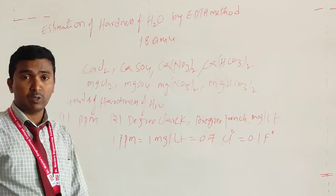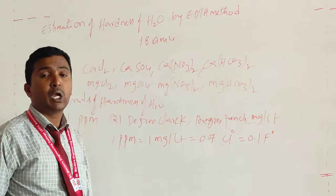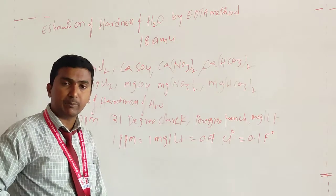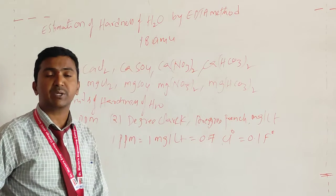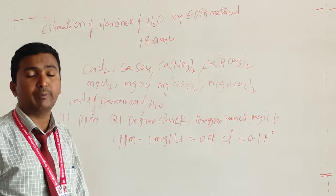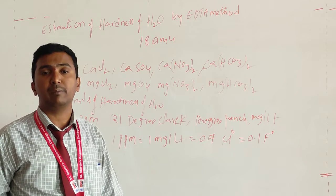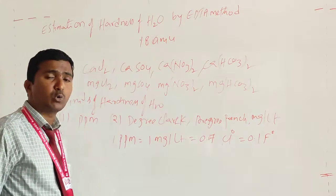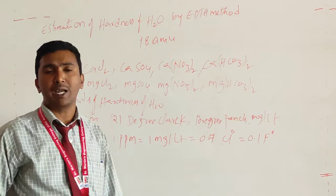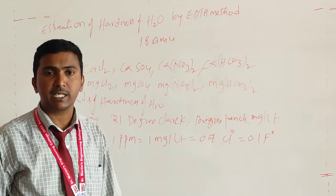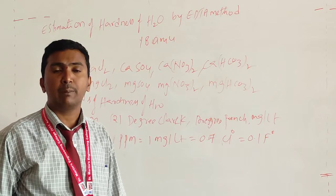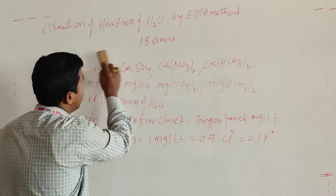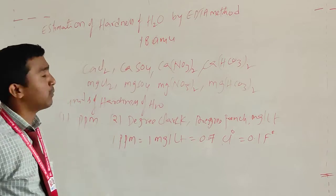Permanent hardness is due to the presence of chlorides, sulfates, and nitrates of calcium and magnesium — such as calcium chloride, magnesium chloride, calcium sulfate, calcium nitrate, and magnesium nitrate. Temporary hardness can be removed by boiling and filtration, while permanent hardness is removed by ion exchange process or lime-soda process.